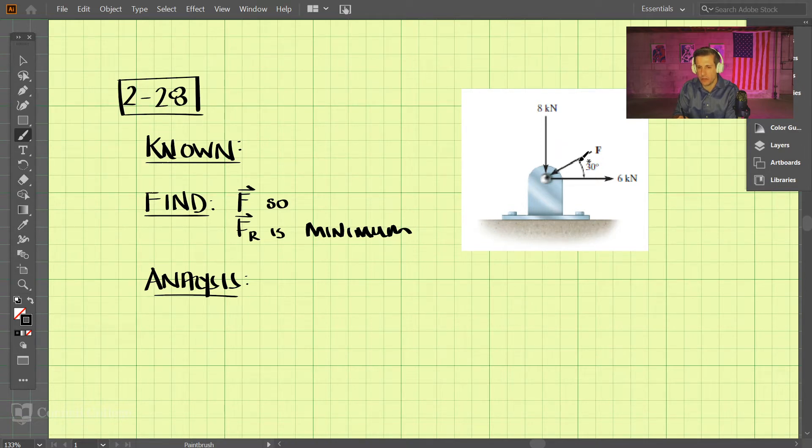To make the resultant of all these vectors added together the smallest on the bracket, I think the easiest way is to first add together the two known vectors. We could add all three together at once, but it gets kind of messy.